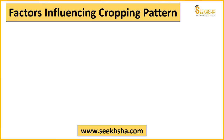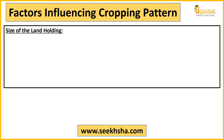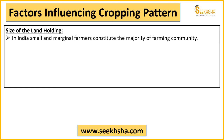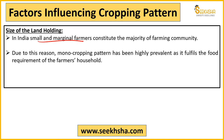Now, the factors influencing cropping pattern — various factors determine cropping patterns in India. The size of land is important: small and marginal farmers have a reason to practice monocropping in India. They have small land holdings and limited market access.